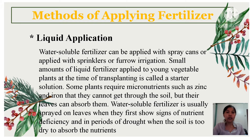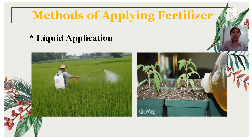Last is liquid application. Water-soluble fertilizer can be applied with spray cans or with sprinklers or furrow irrigation. Small amounts of liquid fertilizer applied to young vegetable plants at transplanting time is called a starter solution. Some plants require micronutrients such as zinc and iron that they cannot get through the soil, but their leaves can absorb them. Water-soluble fertilizer is usually sprayed on leaves when they first show signs of nutrient deficiency and in periods of drought when the soil is too dry to absorb nutrients.